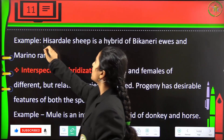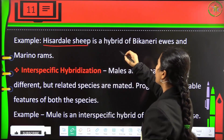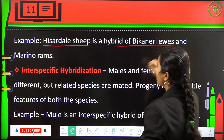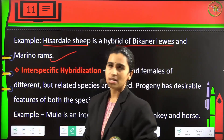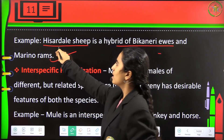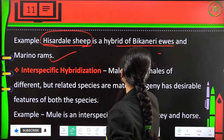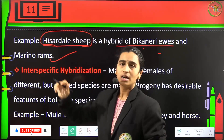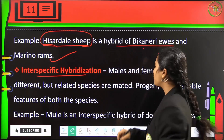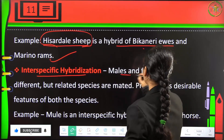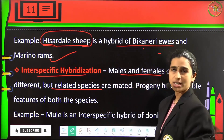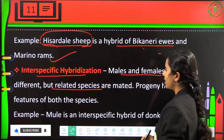An example of crossbreeding is the Hisardale sheep, which is a hybrid of Bikaneri ewes and Merino rams — two different species of sheep. In interspecific hybridization, males and females of different but related species are mated.